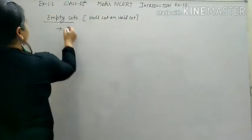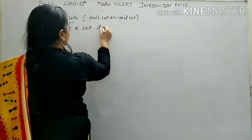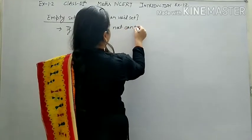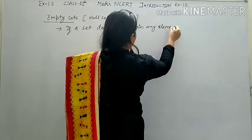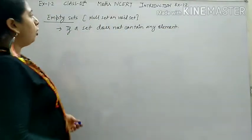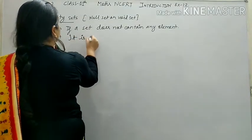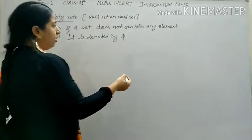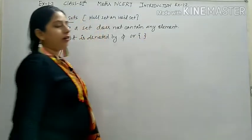If a set does not contain any element, then it is called a null set or an empty set, and it is denoted by the Greek letter phi (φ).